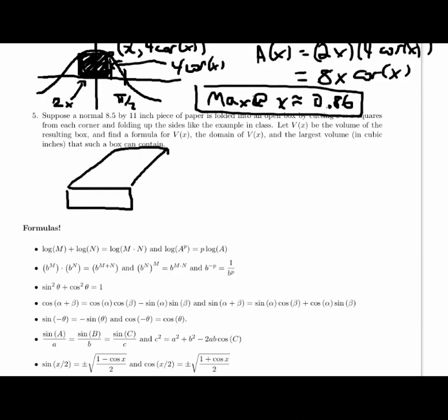So, if we fold an 8.5 by 11 piece of paper up into a box shape, we'll get this sort of tray-looking thing. And I can label the height x, the width this way, 8.5 inches minus 2x, and the dimensions this way, 11 minus 2x.